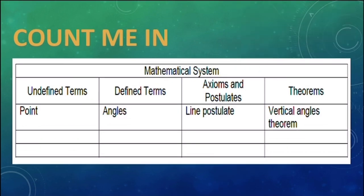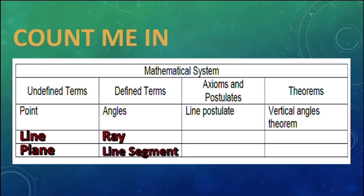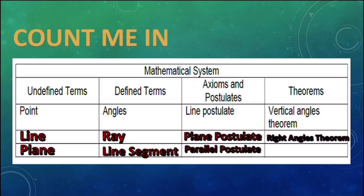Time's up. So now, let's answer the missing parts in each column. For undefined terms, we have line and plane. For defined terms, we have ray and line segment. For axioms and postulates, we have plane postulate and parallel postulate. And for theorems, we have the right angles theorem and the parallel lines cut by transversal theorem. I hope you understand our previous lesson. So now, let's proceed to our discussion.